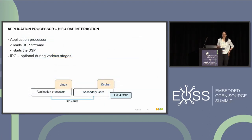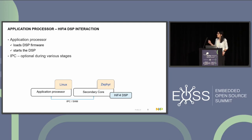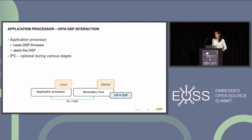How will the interaction between the application processor and the HiFi 4 DSP work? The application processor will be in charge of starting the DSP and loading the firmware on the secondary core. At various stages, we want to have communication between the two cores — inter-process communication. On the application processor, we're going to run Linux. On the secondary core, we want to use Zephyr because of its rich feature set and support for multiple platforms.